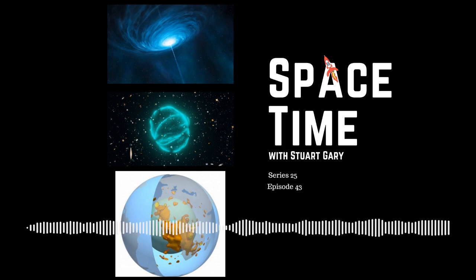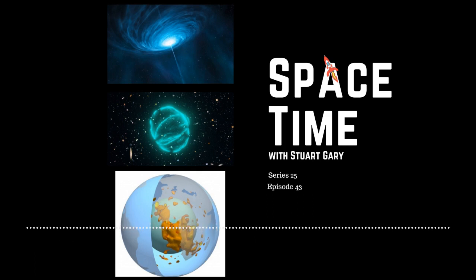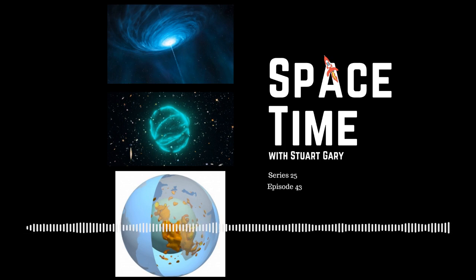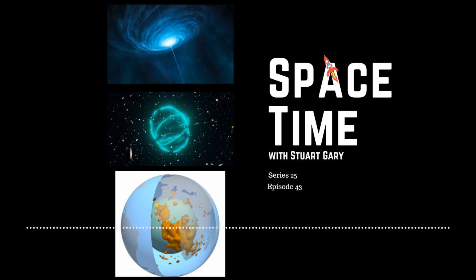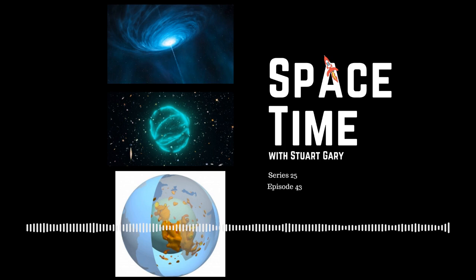One important characteristic is HD1's extremely bright ultraviolet light. To explain this, some energetic processes are occurring there some 13.5 billion years ago. At first, the research team assumed HD1 was a standard starburst galaxy, creating lots of stars at a really high rate. But after calculating how many stars HD1 must be producing, they obtained an incredible, almost unbelievable rate. HD1 must be churning out stars at a rate of at least 100 stars every Earth year. By comparison, our own galaxy, the Milky Way, makes about one new solar mass star every year. HD1's starburst rate is at least 10 times higher than what astronomers would expect from these galaxies.